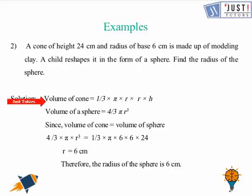The volume of the cone is 1/3 π r² h and volume of sphere is 4/3 π r³. Because the volume remains the same, we need to equate both of them. Equating both we get the value of r, the radius for the sphere, which is 6 centimeters.